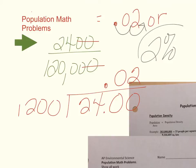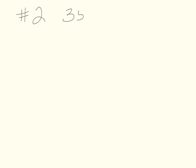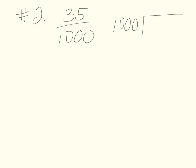Our answer to number one is a 2% birth rate. Going on to number two: what is the birth rate for a country with 35 births per thousand? We write 35 over 1,000 and do a long division problem. Here's our decimal — bring it up, add a zero, still doesn't go in, then put 1 here.